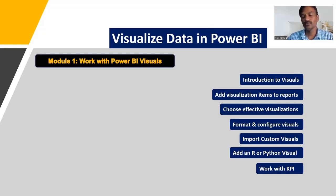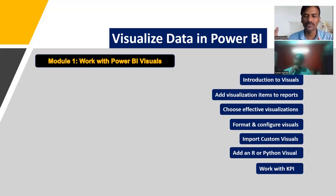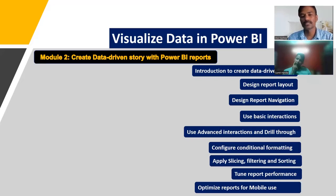The fourth section is Visualize Data in Power BI. Once we have created a data model, we use it to build visuals — column charts, bar charts, line charts, stacked bar charts, and many more. We will see how to add them to a report and create effective visualizations with proper formatting. There are also custom visuals we can create using scripting code. The second module covers creating a data-driven story: designing report layout, report navigation, basic and advanced interactions, drill-through, conditional formatting, slicers, and report filters.